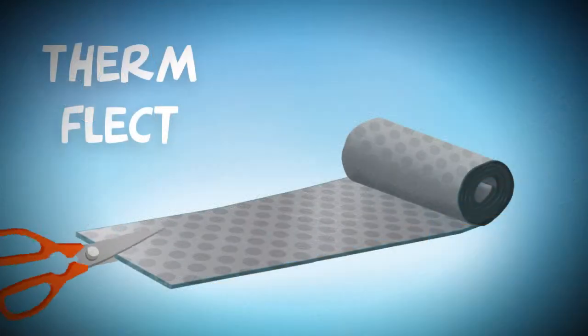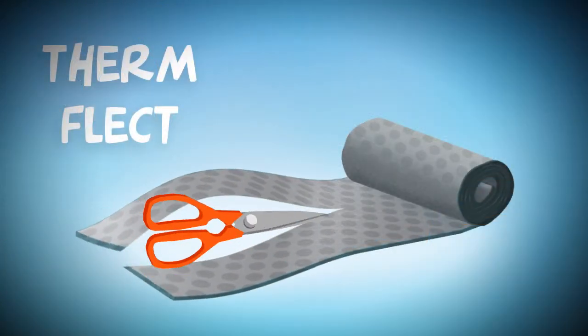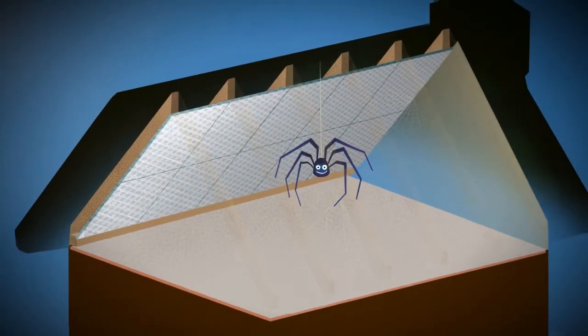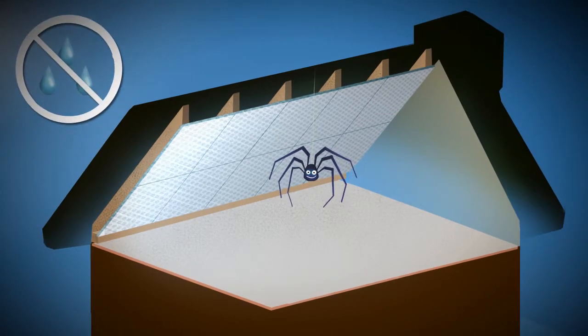It can be cut to size so you don't waste a piece. Firmflect will also make your attic cleaner and brighter and is not affected by humidity.